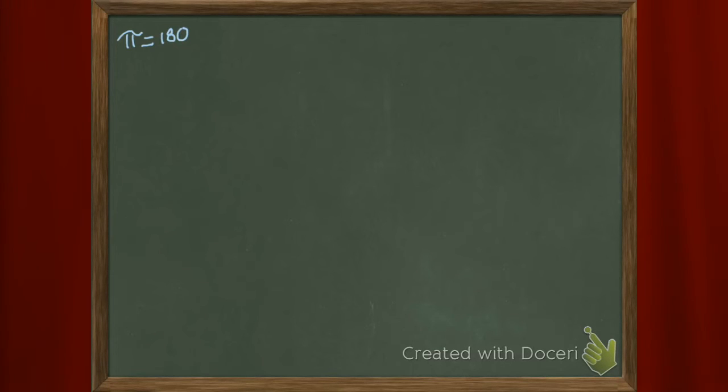We have this established relationship — me and my math got this relationship — that half a circle is pi radians.